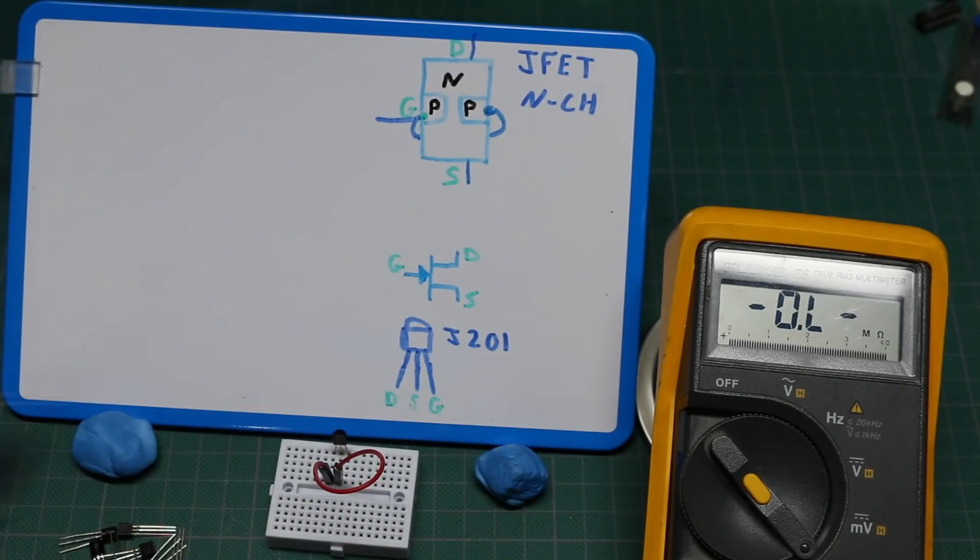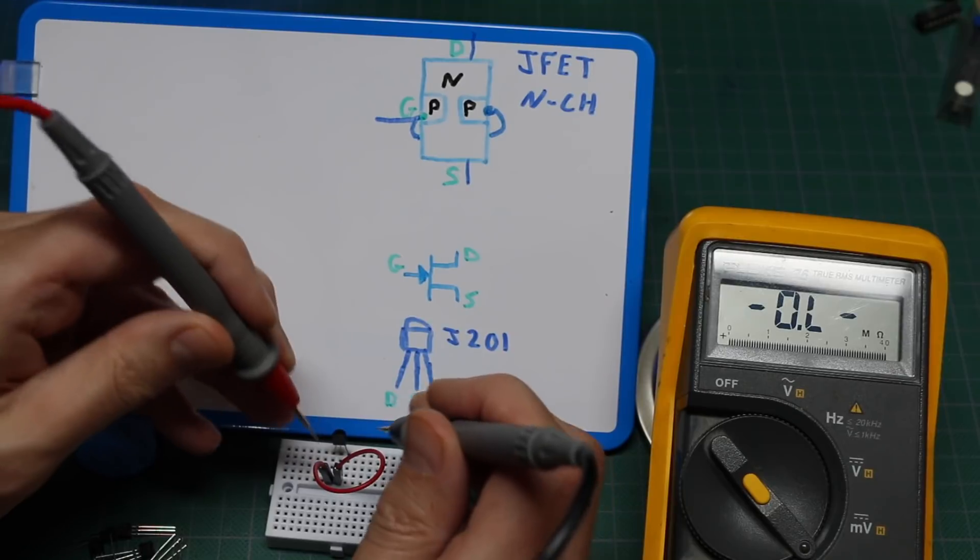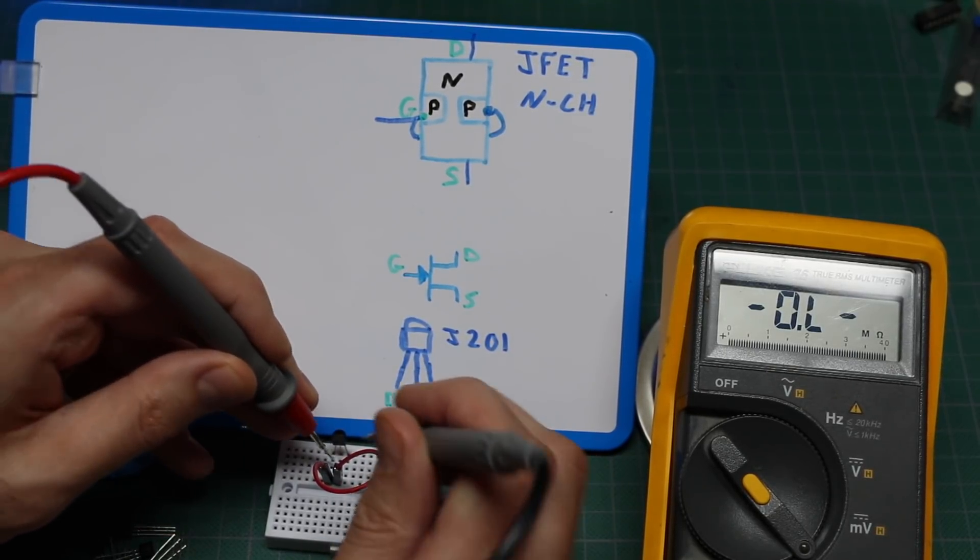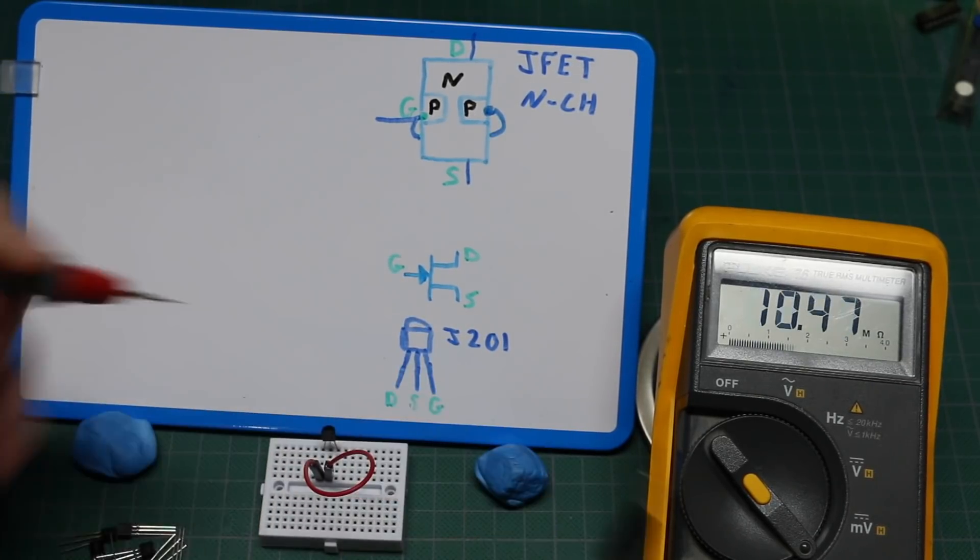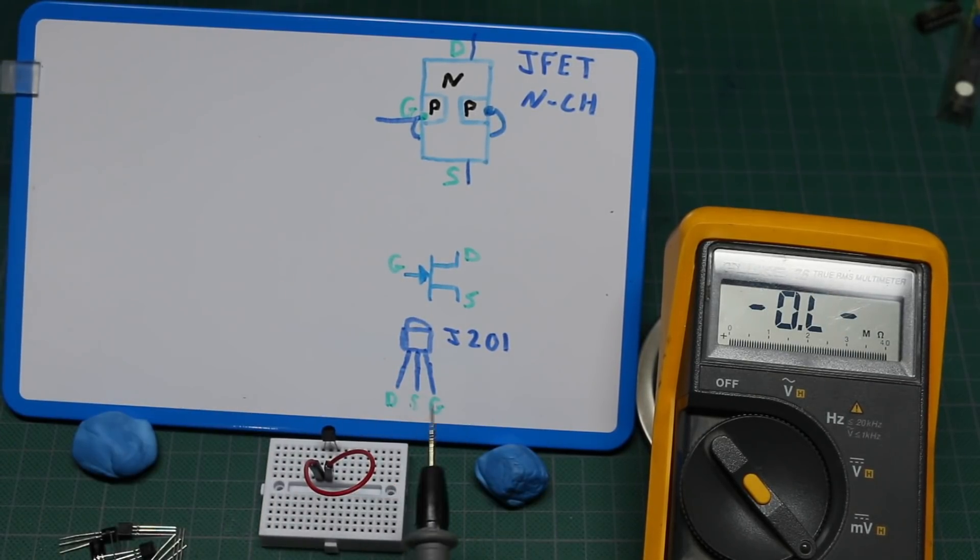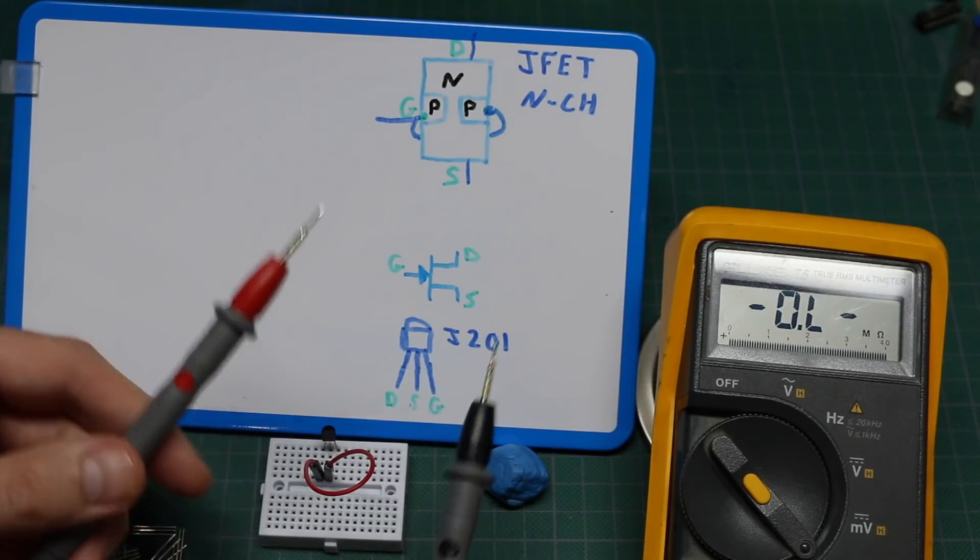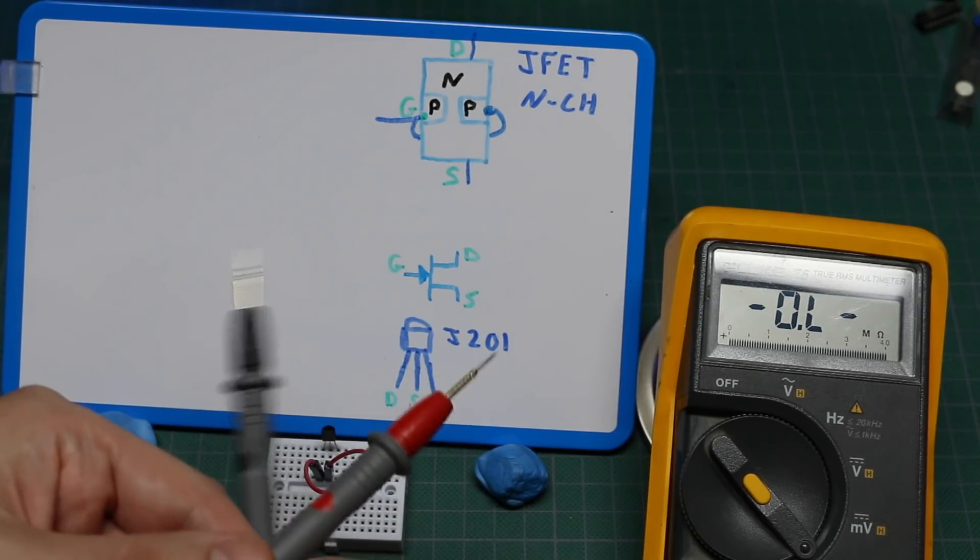The first two pins now are shorted, so the resistance from those two left pins to the far right... All I'm getting in any of these cases is an open circuit in one polarity and four to five megohms in the other polarity.